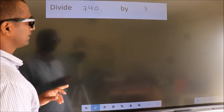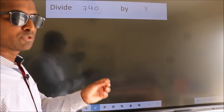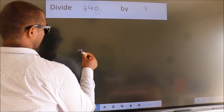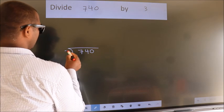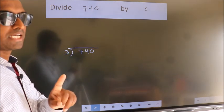Divide 740 by 3. To do this division, we should frame it in this way: 740 here, 3 here. This is your step 1.